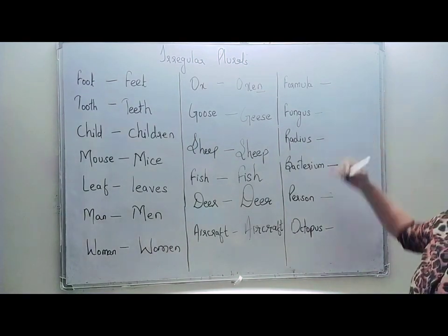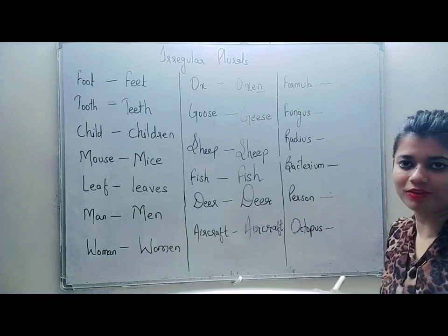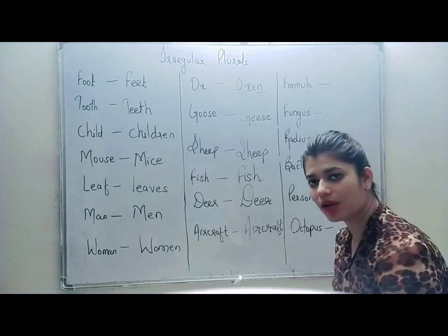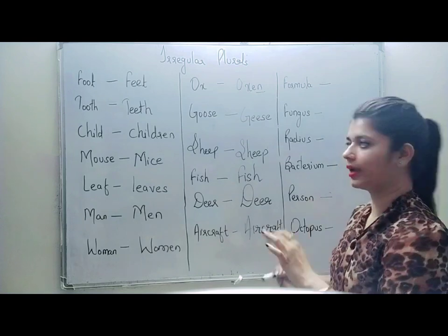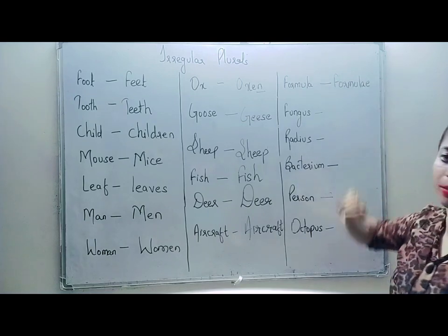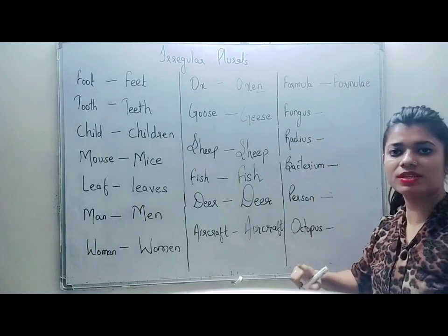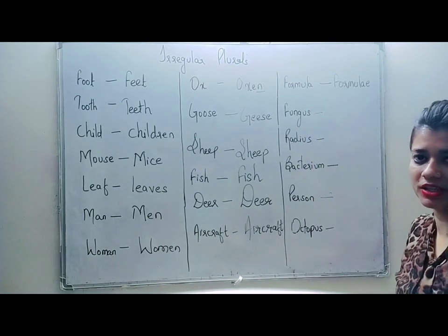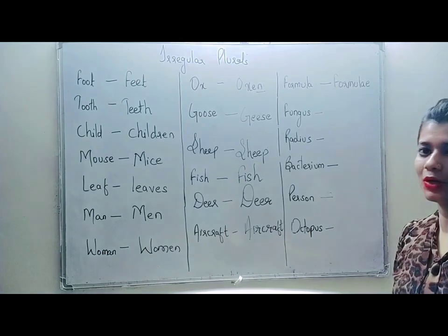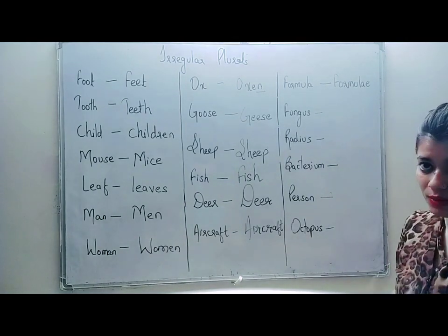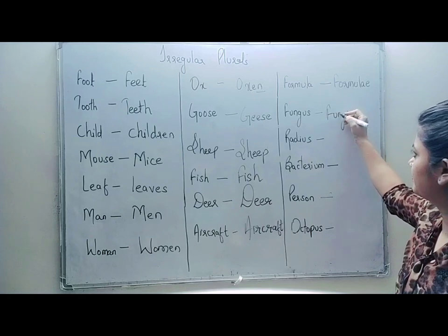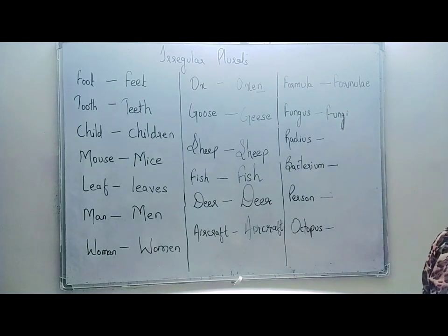Next is formula, which you have heard in maths or chemistry. The plural of formula is not formulas — it will be formulae, F-O-R-M-U-L-A-E. Next comes fungus, which is a microorganism. The plural of fungus will not be funguses — it will be fungi, F-U-N-G-I. You can also pronounce it as fungi.